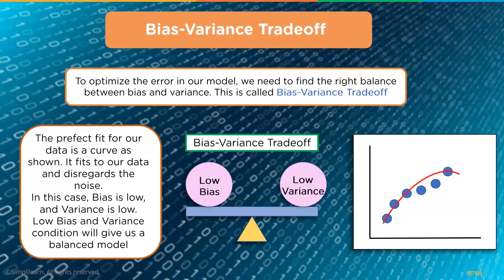The perfect fit is a curve that fits the data and disregards the noise. In this case bias is low and variance is low — a balanced model. We train the model as well as we can so that its prediction on unknown data and on its trained data match with the same amount of error. After that point, we're just programming noise into the model.